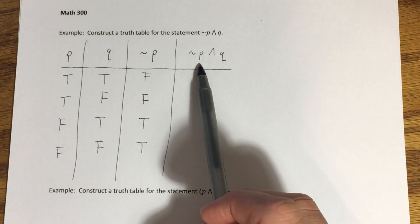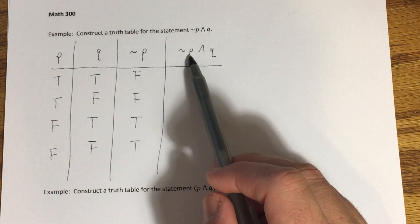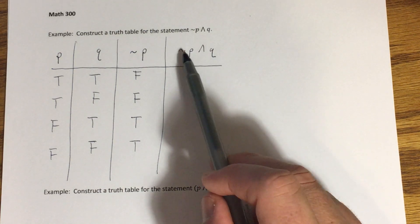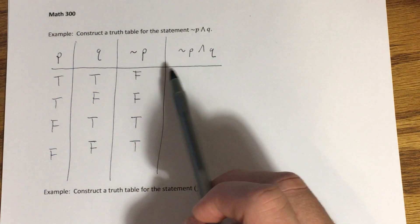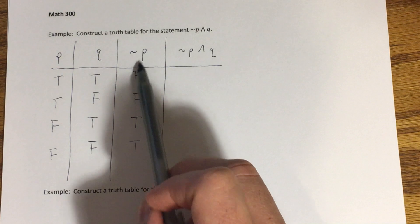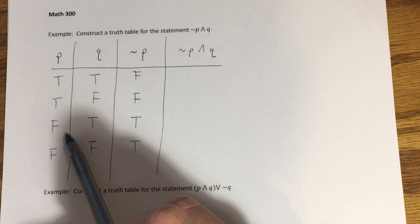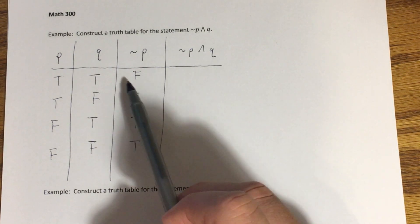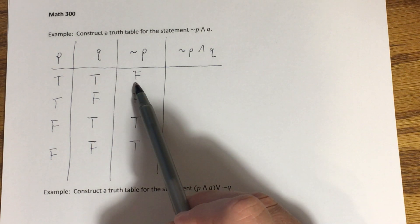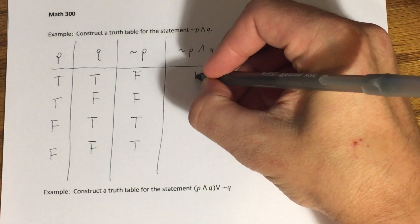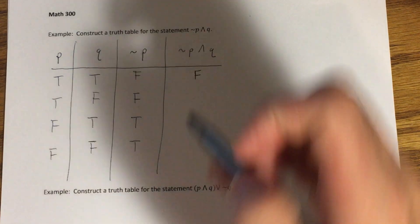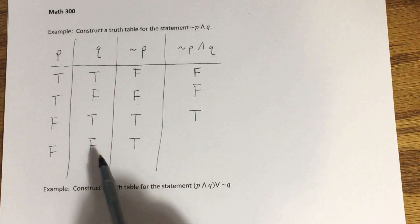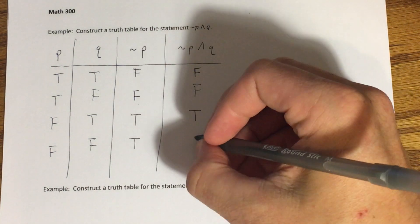Now for the fourth column — the conjunction 'not p and q.' A conjunction can only be true if both component statements are true. 'Not p' and q correspond to the third and second columns respectively. In the first row, one is false — so the conjunction is false. In the second row, both are false — false. In the third row, both are true — conjunction is true. In the last row, one is false — false again.